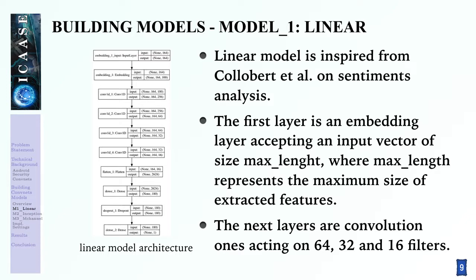Now we turn to building the convolutional models. Neural models are built by stacking different types of layers, either in sequential or parallel manner, or some mixture of the two. We begin our experiment with a linear model inspired by the model of Collobert on sentiment analysis. The architecture starts with an embedding layer, followed by four convolutional layers, then flattening, a dense layer, some dropouts, and finally a dense layer again. The convolutional layers act on 64, 32, and 16 filters.